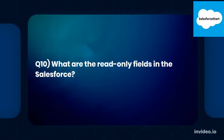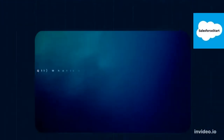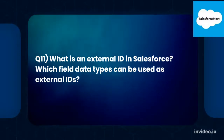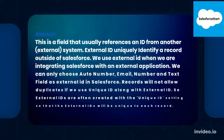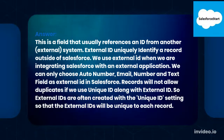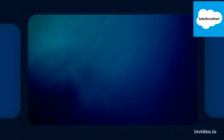Q10: What is an external ID in Salesforce, and which field data types can be used as external IDs? An external ID is a field that usually references an ID from another external system, uniquely identifying a record outside of Salesforce. We use external IDs when integrating Salesforce with an external application. We can only choose Auto Number, Email, Number, and Text field types as external IDs. Records will not allow duplicates if we use a unique ID along with the external ID, so external IDs are often created with a unique ID setting.